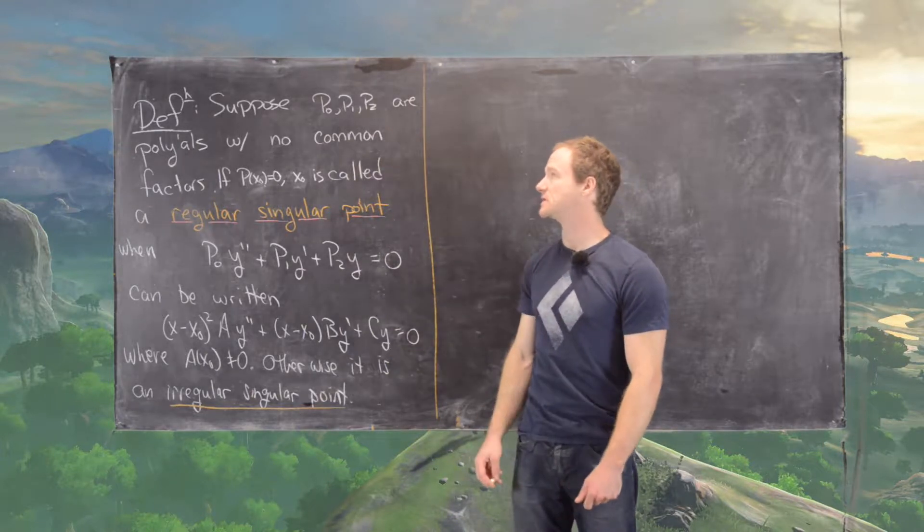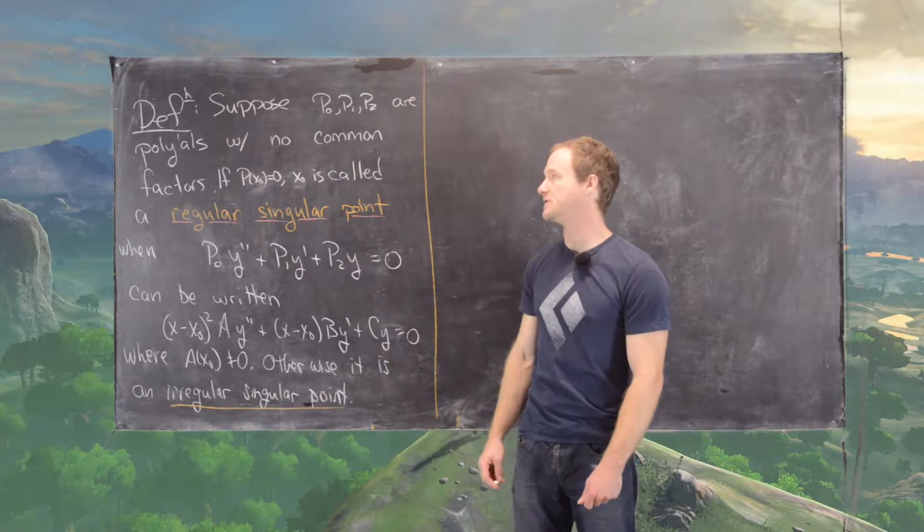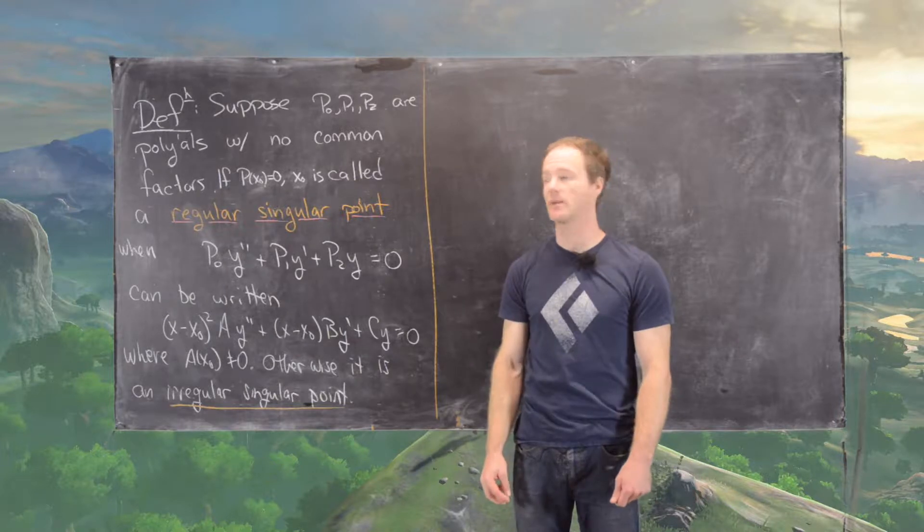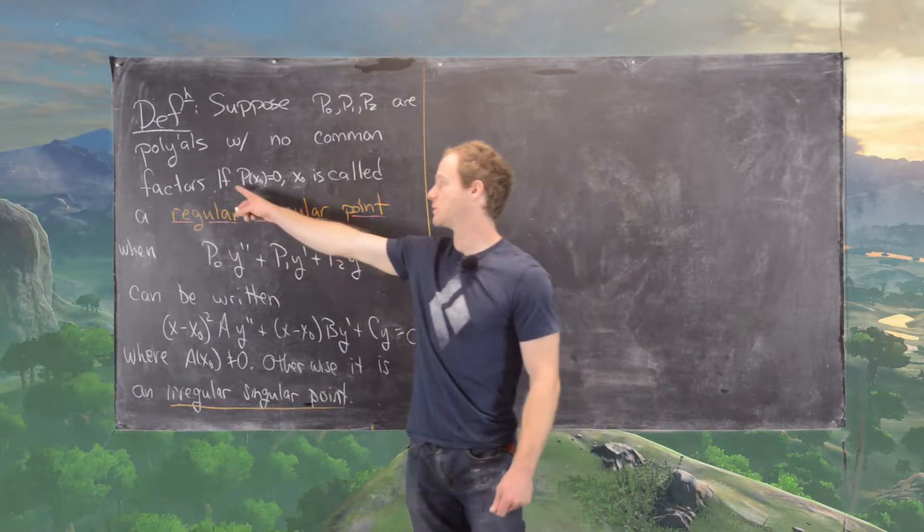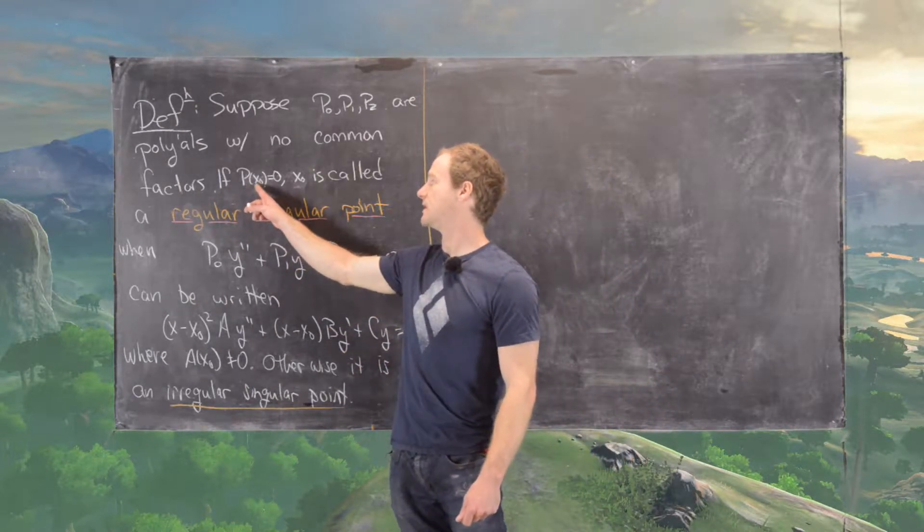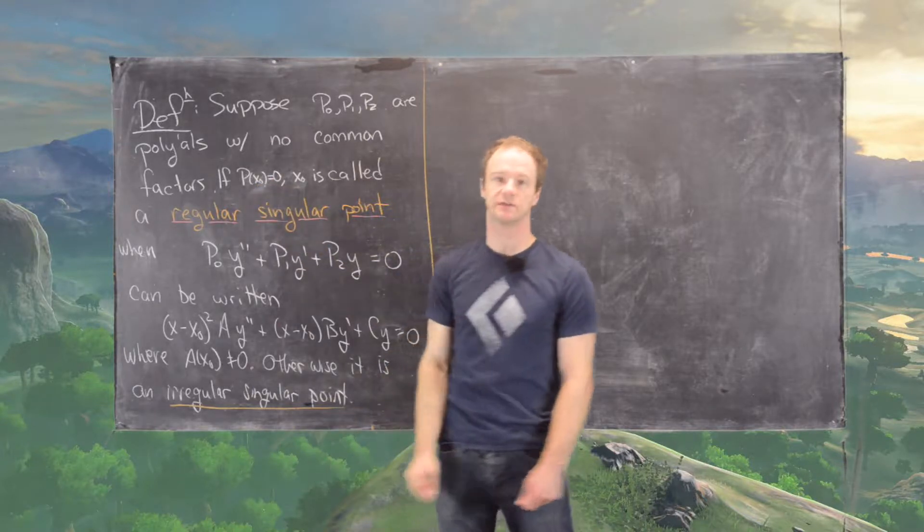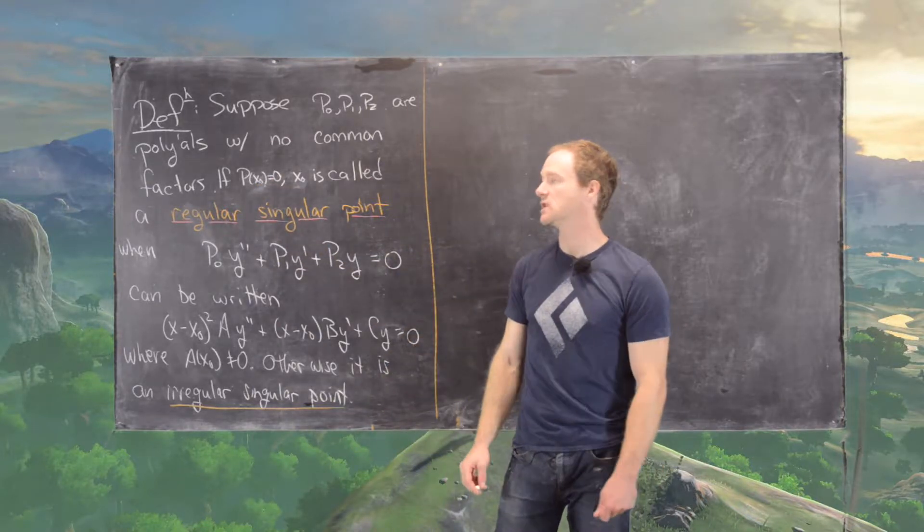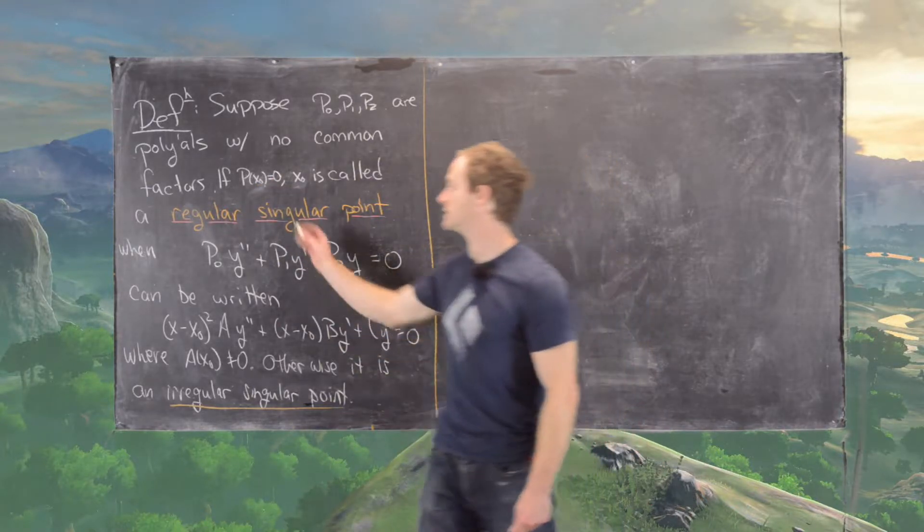We want to start off by supposing that p0, p1, and p2 are all polynomials with no common factor. And then we also want to suppose that p of x0 is equal to 0, so x0 is a root of p of 0.